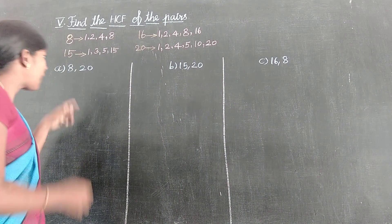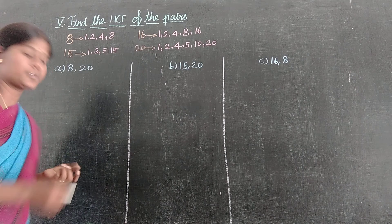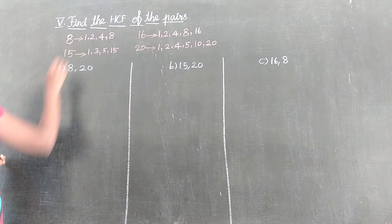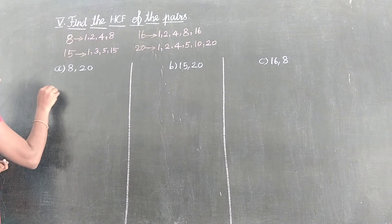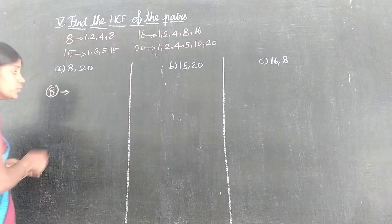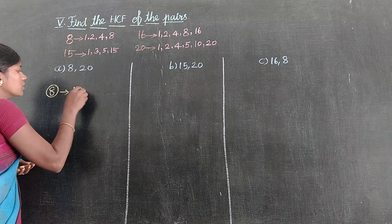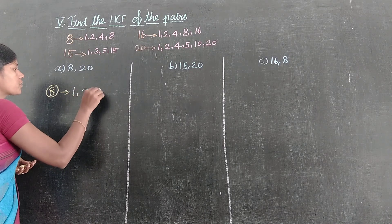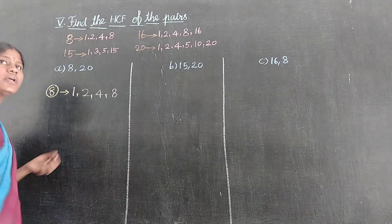The first pair is 8 and 20. So first, 8 is the factor. How do you compare? 1, 2, 4, 8. 1, 2, 4, 8.